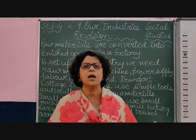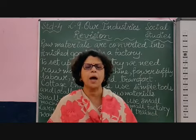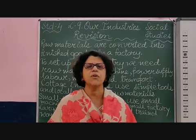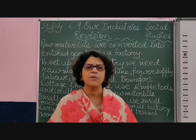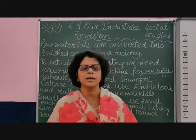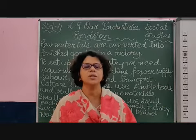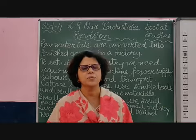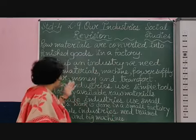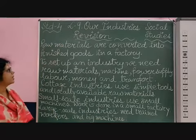Take a simple product like bread. We go to the shop and buy a packet of bread. Bread, as we know, is made from flour. That flour is produced by the farmers from wheat. So with the help of different raw materials, a product is made in our industries. We are going to revise lesson number 9: Our Industries.